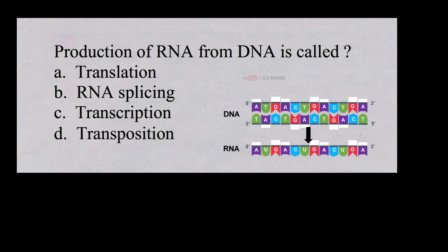Production of RNA from DNA is called: a. Translation, b. RNA splicing, c. Transcription, d. Transposition. And the correct answer is c. Transcription.